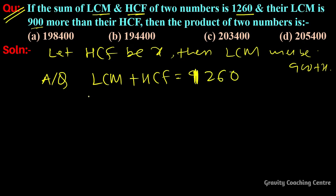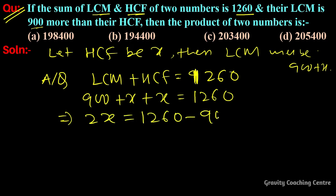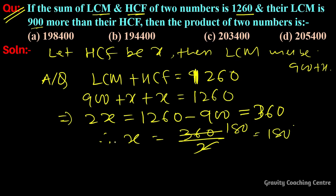So 900 plus x plus x equal to 1260. So this implies that 2x equal to 1260 minus 900, so equal to 360. Therefore x equal to 360 upon 2, so equal to 180.